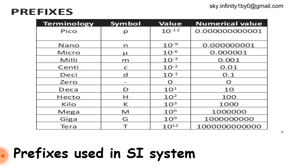For 10 raised to 1 we use the terminology deca, for 10 raised to 2 we use hecto, for 10 raised to 3 we use kilo, for 10 raised to 6 we use mega, for 10 raised to 9 we use giga, and for 10 raised to 12 we use tera.